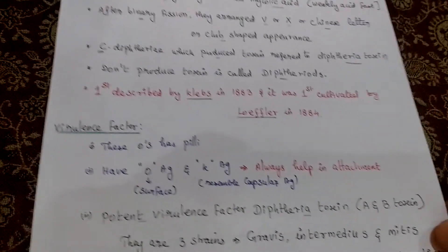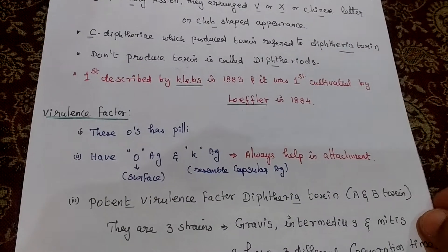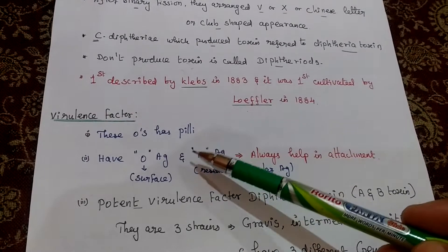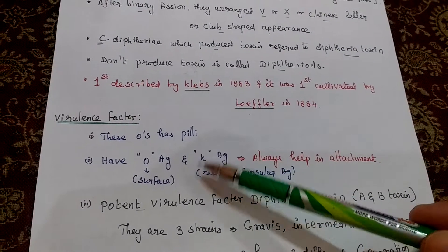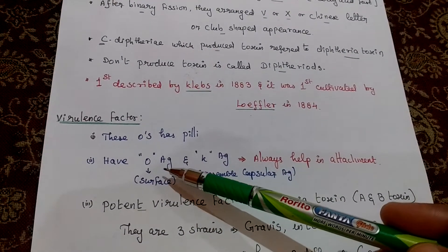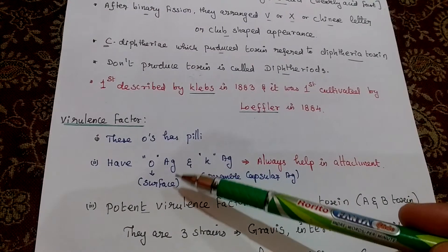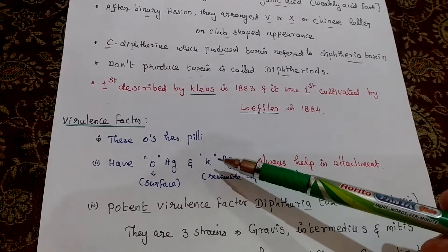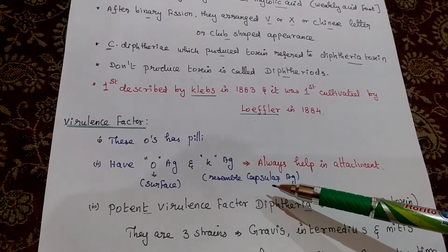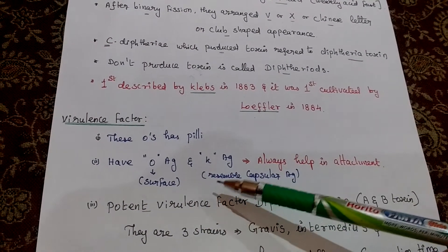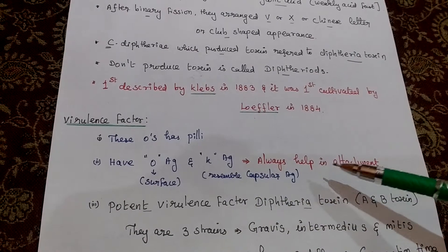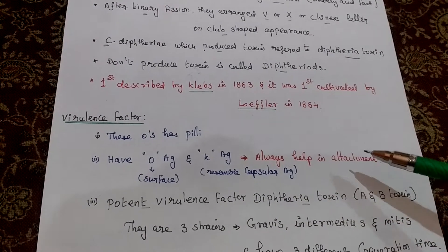Virulence factors of this organism: it has pili particles. It has two antigens — O antigen and K antigen. O means somatic surface antigen, K means capsular antigen. Both antigens help in attachment to the host.